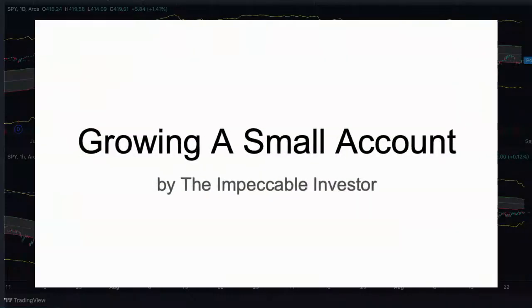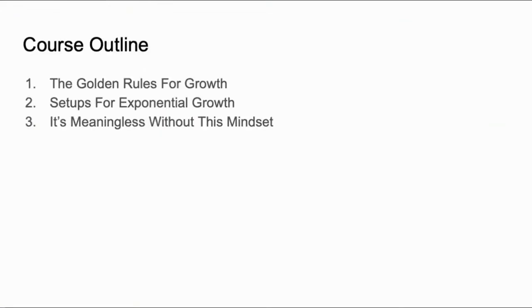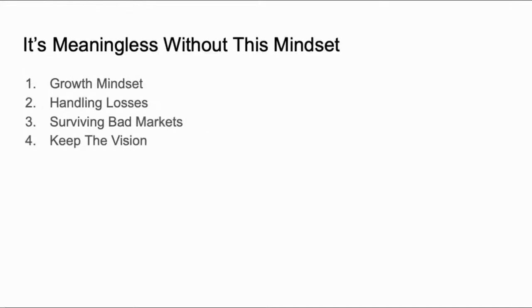Welcome to the last video in the Growing a Small Account mini course. The course outline covered: golden rules for growth — setting up a risk management strategy, setting up a trade setup with a checklist, and increasing your size responsibly. Video two covered setups for exponential growth, walking through step-by-step how to implement the strategy of the software for investing, swing trading, and options. Now in this video, we're going to cover 'it's meaningless without this mindset' — including a growth mindset, handling losses, surviving bad markets, and keeping the vision.